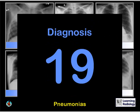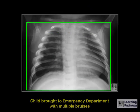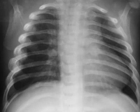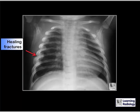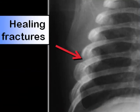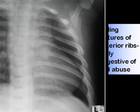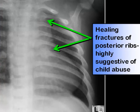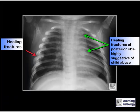This child was brought to the emergency department with multiple bruises. There are healing fractures of the lateral ribs on the right side, as evidenced by callus formation. There is also callus formation of two of the posterior ribs on the left side. Healing rib fractures, especially of the posterior ribs, is highly suggestive of child abuse.